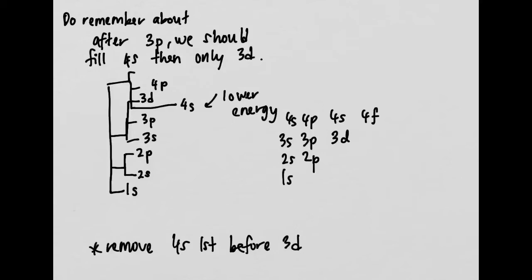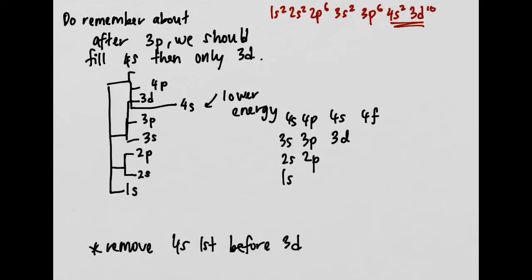When filling up electronic configuration, after 3p we do not go to 3d. The order is: 1s², 2s², 2p⁶, 3s², 3p⁶ — and after 3p⁶, you fill 4s² first, then 3d. This is very important to remember — which one we fill first.